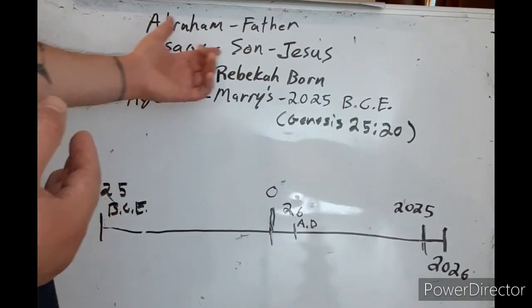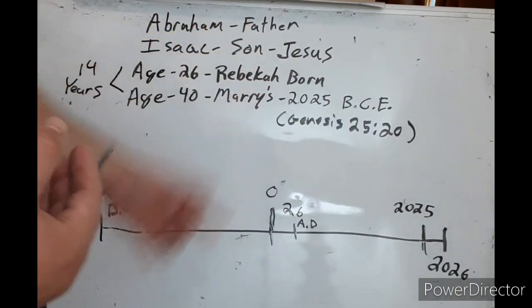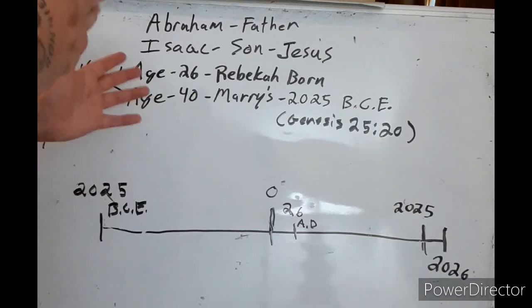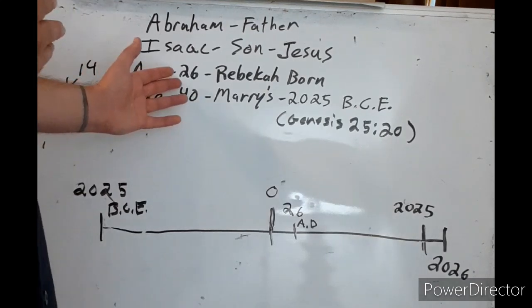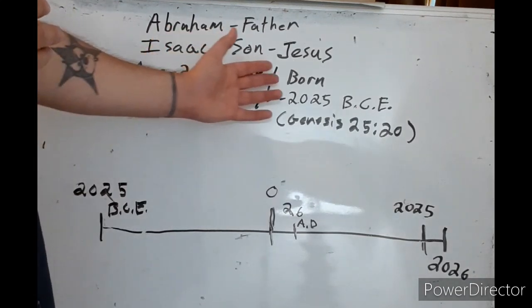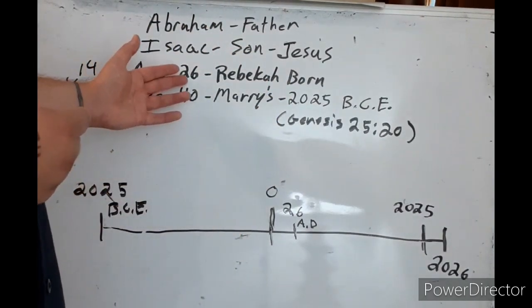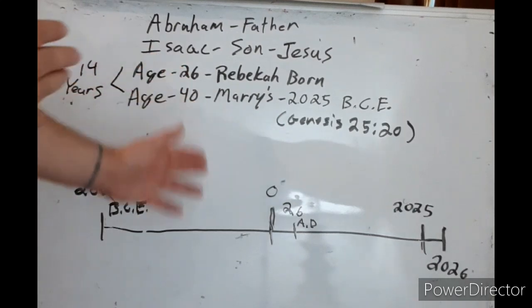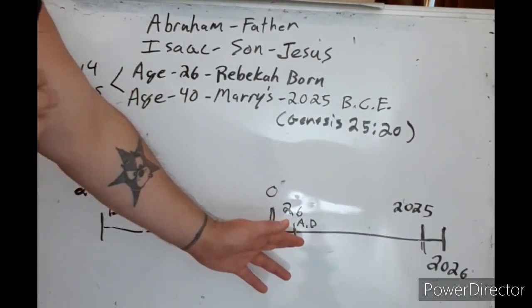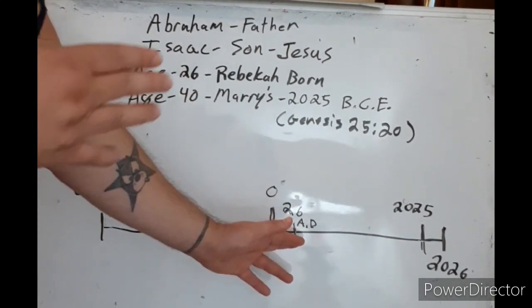Isaac is the type of shadow of the Son, Jesus. Now at age 26, Rebecca, who he would later marry, was born. So he was 26 when she was born. Now this is linked to 26 AD when Jesus Christ starts his ministry.